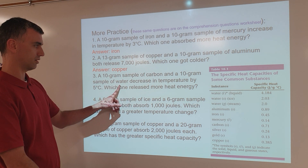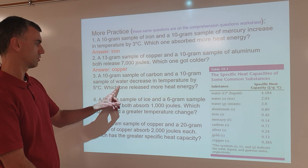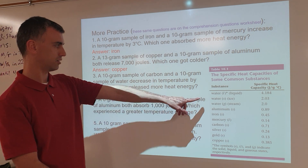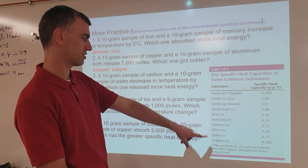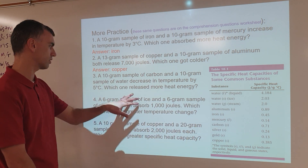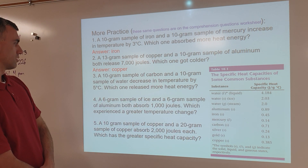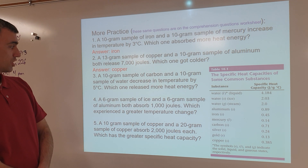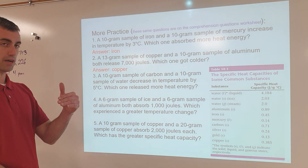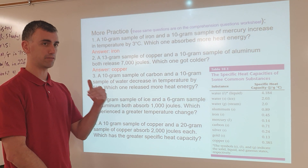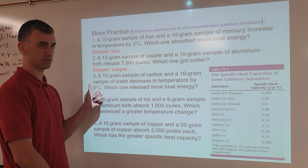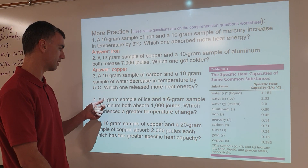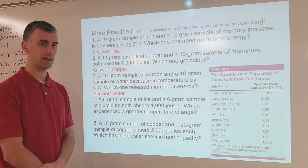Carbon and water. Water has a specific heat capacity of 4.184 joules per gram per Celsius, and carbon is 0.71. So carbon has a lower specific heat capacity and water has a higher one. They have the same temperature change — which one releases more energy? Again, higher specific heat capacity means more joules for every degree Celsius, so the higher specific heat capacity substance releases more joules per degree. I choose water.